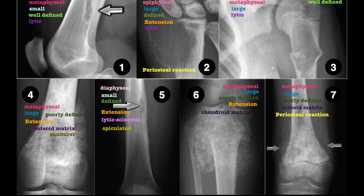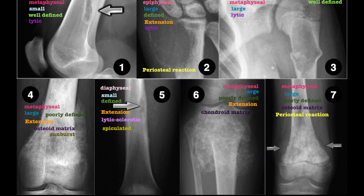H is for Healing. Sclerosis and healing of pathological fractures suggest that there is a host response and therefore it is a benign process. In the diagrams used, there is unfortunately no good example of this process.